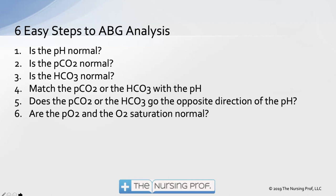Then in step four we match the CO2 or the bicarb with the pH. After that, we move to step five: we look and see if the CO2 or the bicarb goes the opposite direction of the pH — that would be compensation. Lastly, step six: are the PO2 and the O2 saturation normal? After we've made our determination about pH balance, then we start to look at oxygenation.